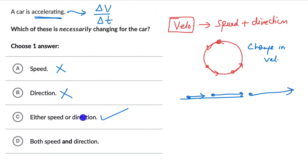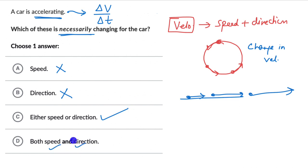Option D says both speed and direction must change, but the question asks what is necessarily changing. It is not necessary that both quantities change — only one needs to change for there to be a change in velocity and therefore acceleration. So option D is wrong. Option C is the correct answer.